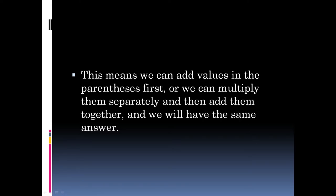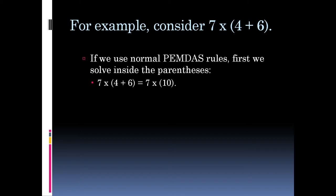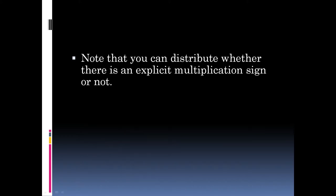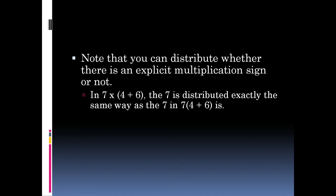That's what the law of distribution guarantees us. Consider 7 explicitly multiplied into the quantity 4 plus 6. Using PEMDAS, we solve inside the parentheses first: 7 times 10 equals 70. But we can also distribute 7 through the term: 7 times 4 plus 7 times 6 equals 28 plus 42 equals 70. You can distribute whether there is an explicit multiplication sign or not. 7 times the quantity 4 plus 6 distributes exactly the same way as 7 parentheses 4 plus 6 in parentheses.